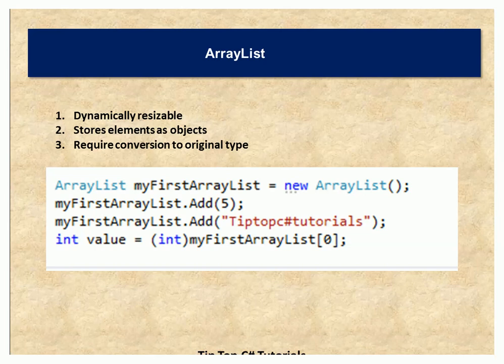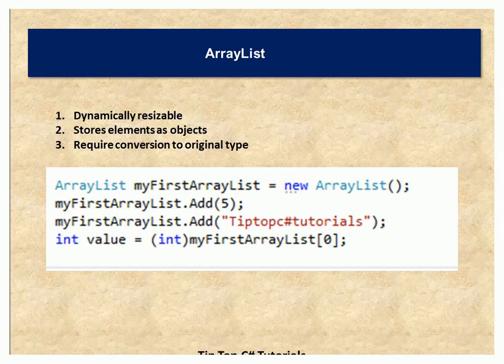Let's go through this step by step. First we are declaring an ArrayList: myFirstArrayList equal to new ArrayList. Then we are adding an integer element to it, and next we are adding a string. Notice the fact that we are adding multiple types of elements — one integer and one string. That is the advantage of ArrayList: it supports multiple types. While retrieving the element, as we discussed, we need to convert the element back to its original type.